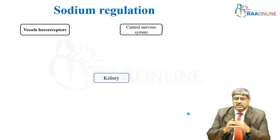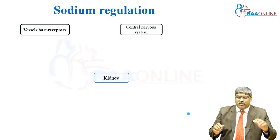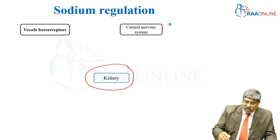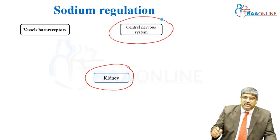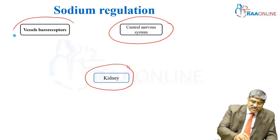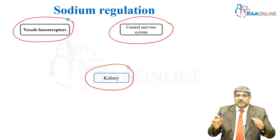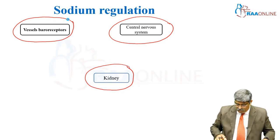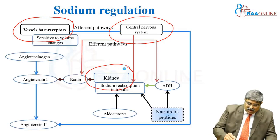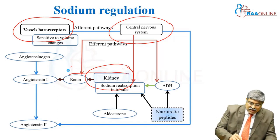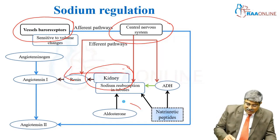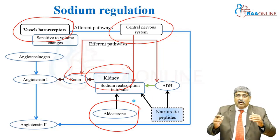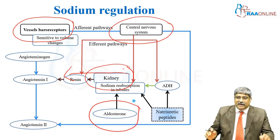The three main organs concerned with sodium homeostasis are the kidney, which is the main regulator of sodium balance, followed by the central nervous system and the vascular baroreceptors related to the sympathetic system and volume balance. The kidney regulates sodium balance through the renin-angiotensin pathway, and finally aldosterone, which is the main mechanism for sodium and water retention.